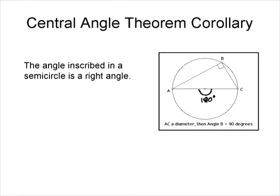Here's the chord, sorry, here's the arc that's being subtended, the semicircle. Or we could also view it as this chord, AC, that's being subtended. And if the central angle is 180 degrees, then that tells us that the inscribed angle must be half of that, so it must be 90 degrees. And that's what we know here, that if AC is the diameter, then angle B is 90 degrees.